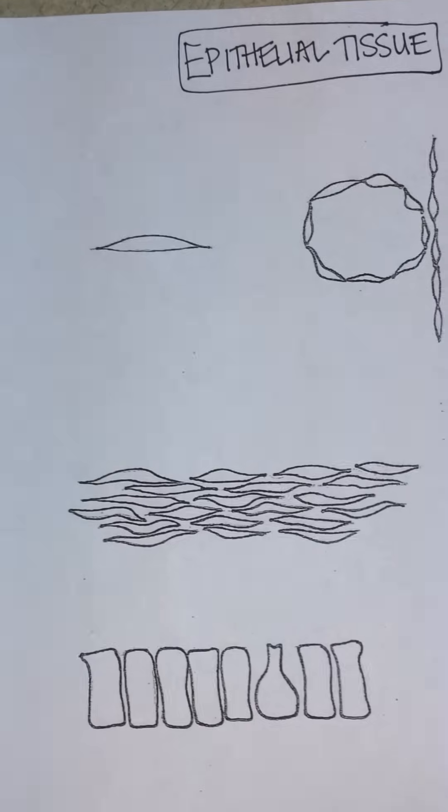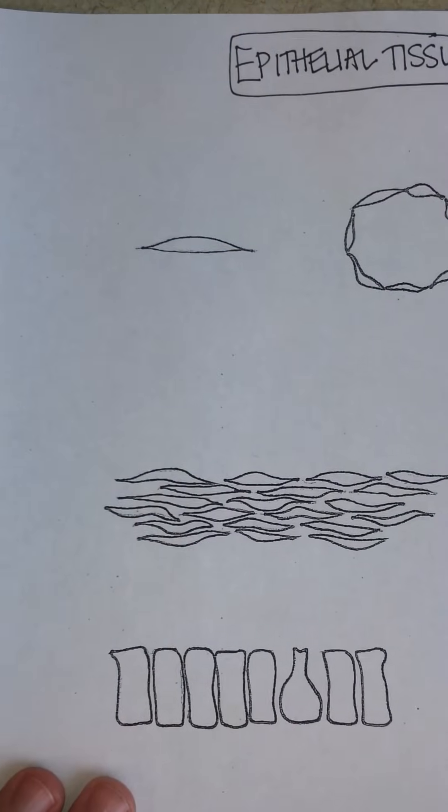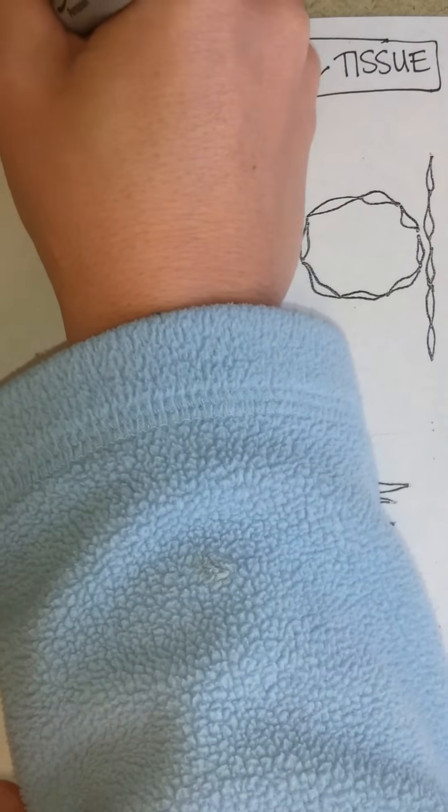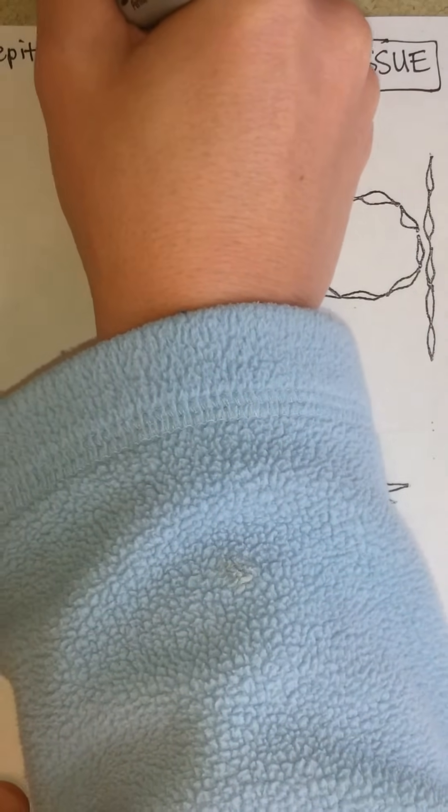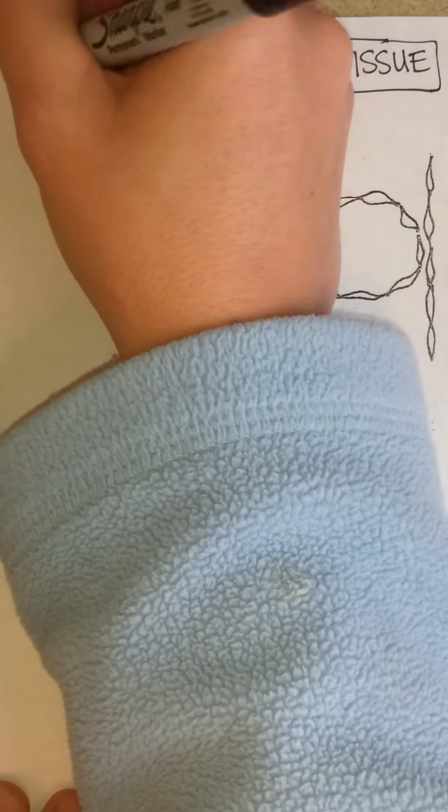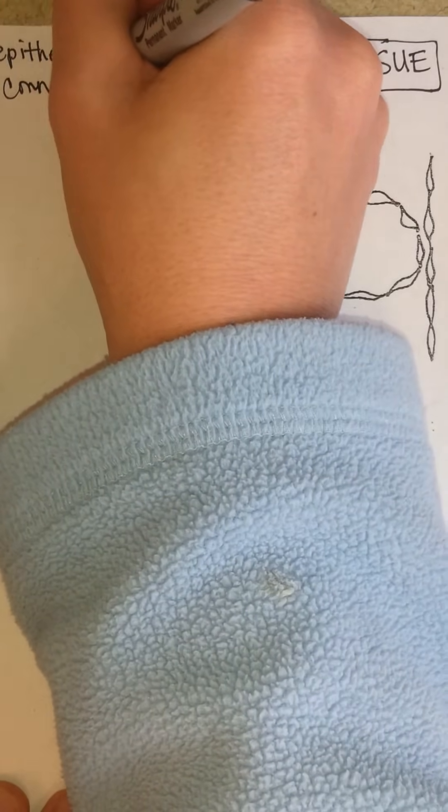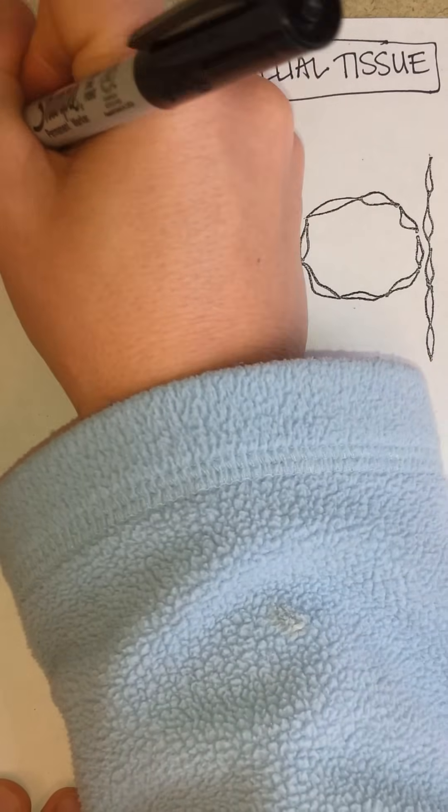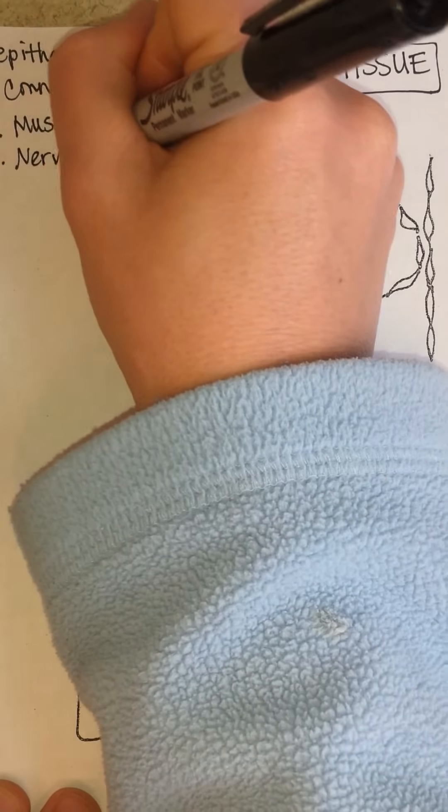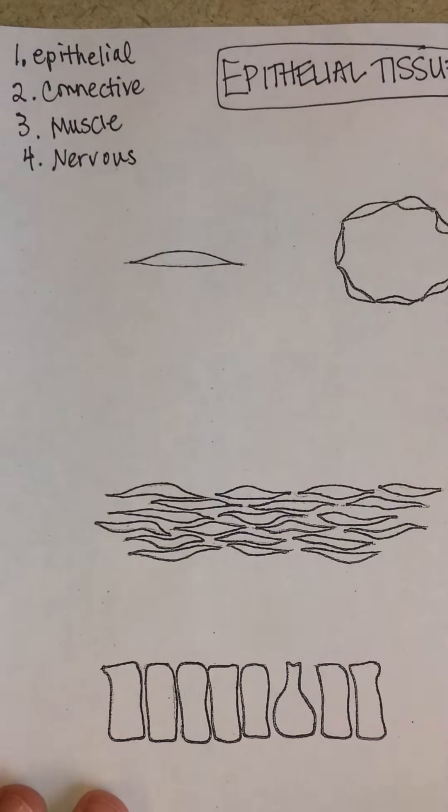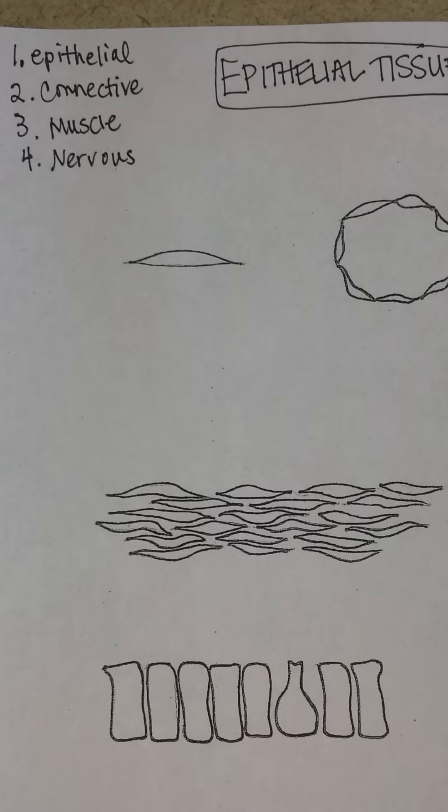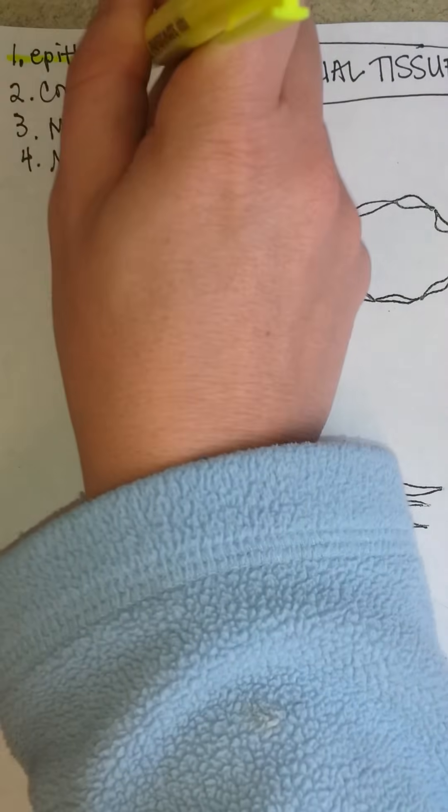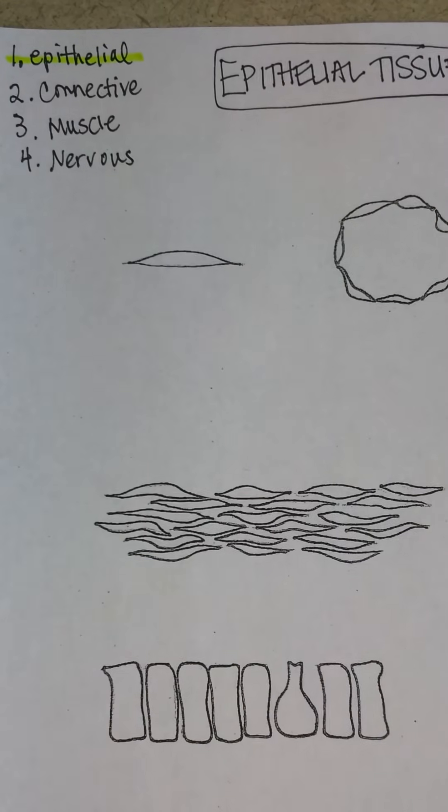You might remember that I mentioned there are four main kinds of tissue in the body. They are epithelial, connective, muscle, and nervous. So every area of the body is one of these four kinds. And now I'll tell you a little more about epithelial and all the different kinds.